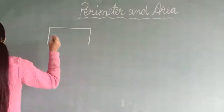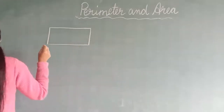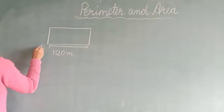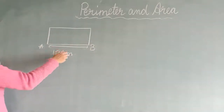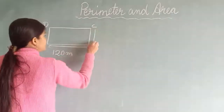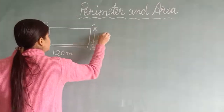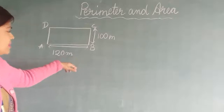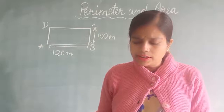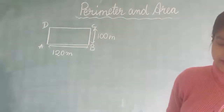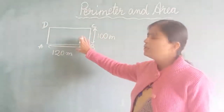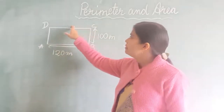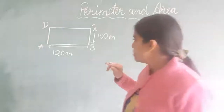I am giving the name of this rectangular path as A, B, C, D. The length of the path is 120 metres and the breadth is 100 metres. Rani goes for a morning walk around this rectangular path. We need to find the total distance she covers, which means we need to calculate the perimeter of the rectangular path. Since it is a rectangle, the length of AB equals the length of DC, which is also 120 metres.